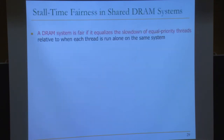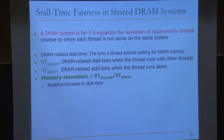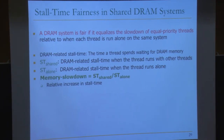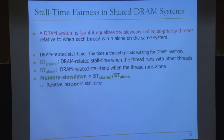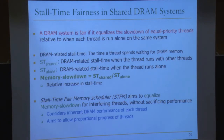The definition: a DRAM system is fair if it equalizes the slowdown of equal priority threads relative to when each thread runs alone. DRAM-related stall time of a thread is the time spent waiting for DRAM. Stall time shared is the DRAM stall time when running with other threads in a multi-core system, and stall time alone is when running alone. Slowdown is stall time shared divided by stall time alone. If a thread runs 10 seconds shared versus 1 second alone, the slowdown is 10x.